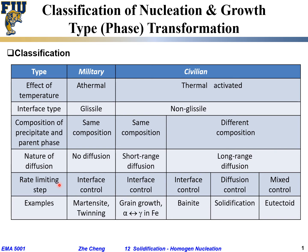The rate-limiting step: since military transformations don't involve diffusion, they are typically interface-controlled or reaction-controlled. For civilian transformations, some are also reaction-controlled — meaning diffusion is very short-range, so the time for diffusion is short, and those are interfacially controlled. Others can be diffusion-controlled or mixed-controlled, between reaction control and diffusion control.